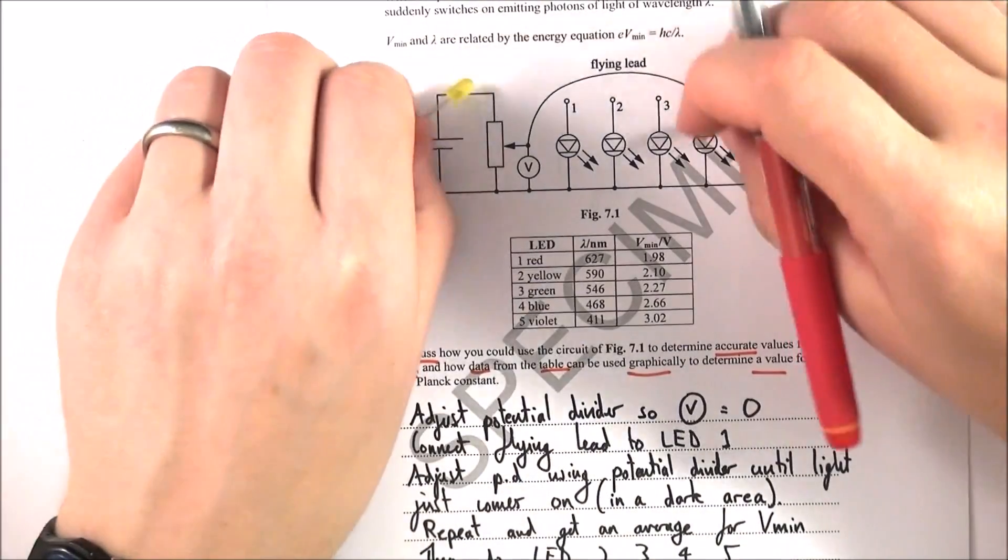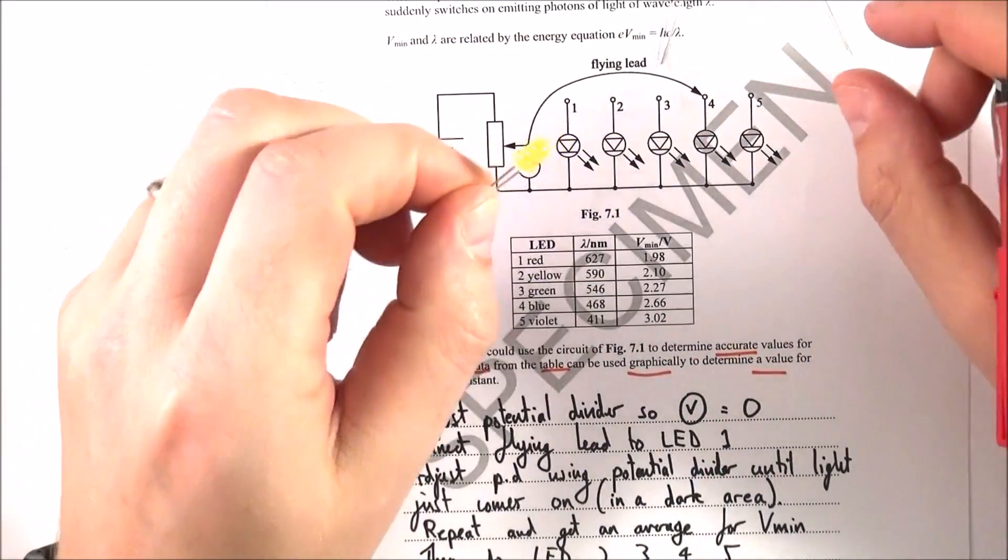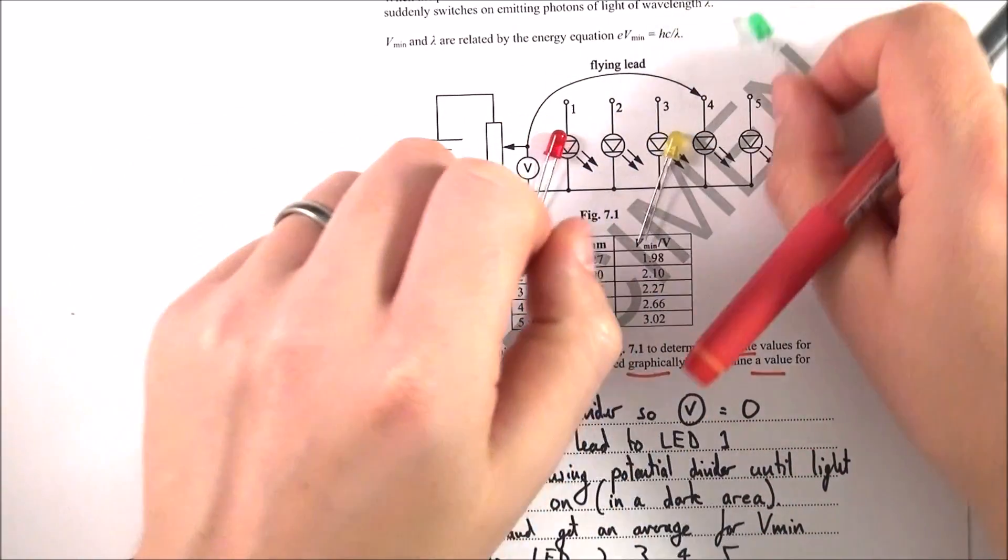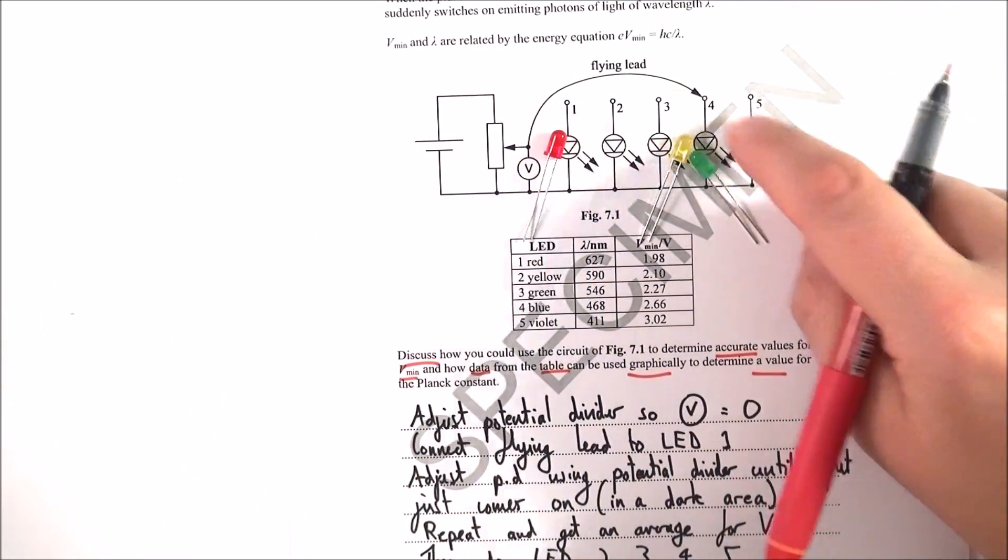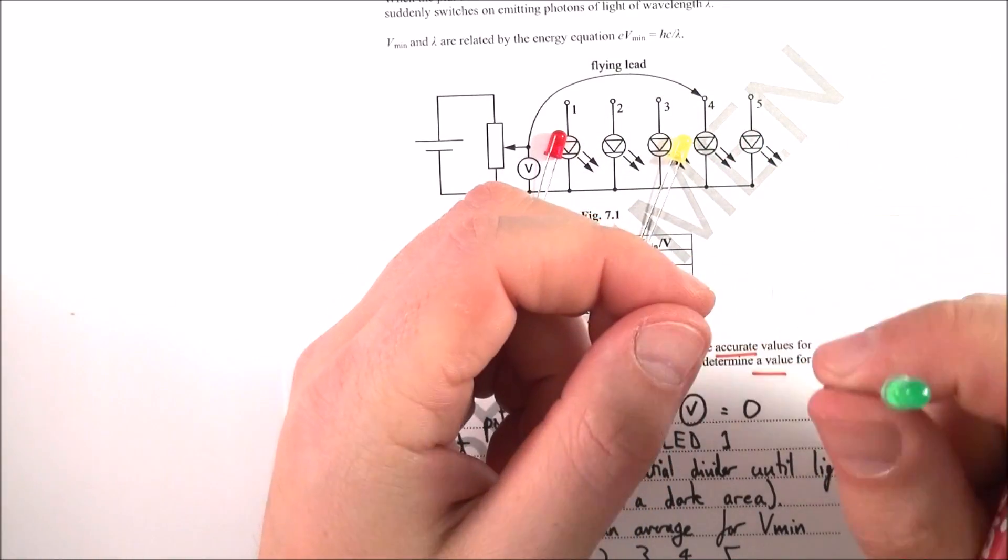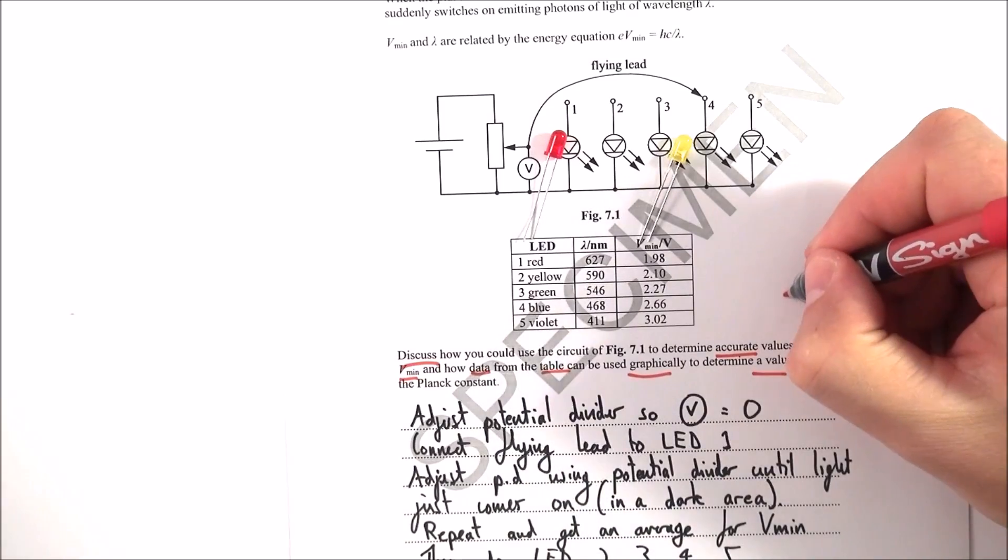First of all, this circuit here, what you do is you have different LEDs which have different colors. You might start out with red, maybe move to orange to yellow to green and then perhaps blue. You've got different color LEDs.